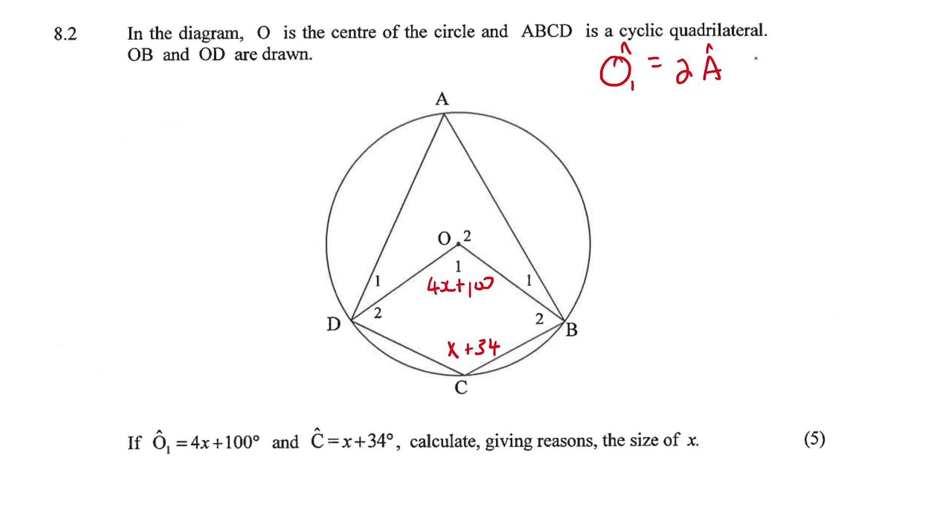because angle at center equals 2 times angle at circumference. So this one is going to be half of 4x + 100, which is 2x + 50. Angle A equals 2x + 50.